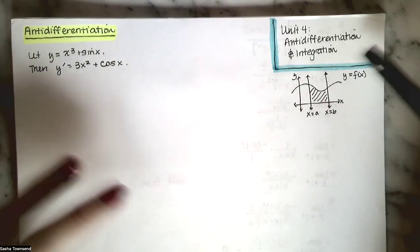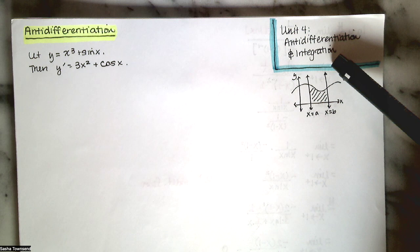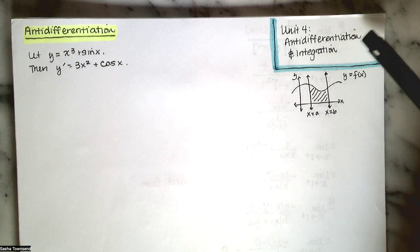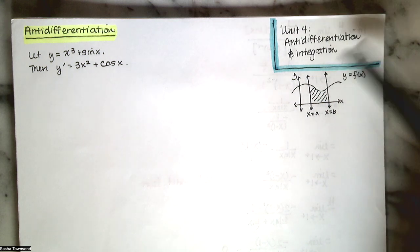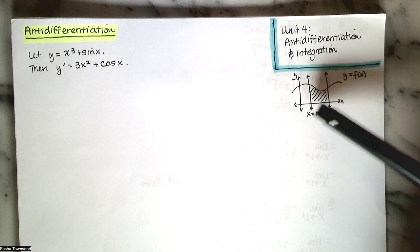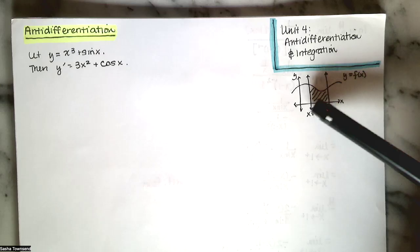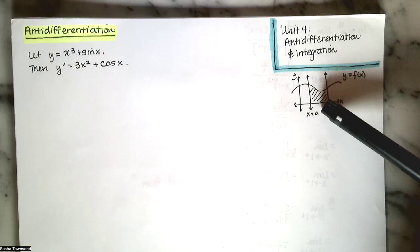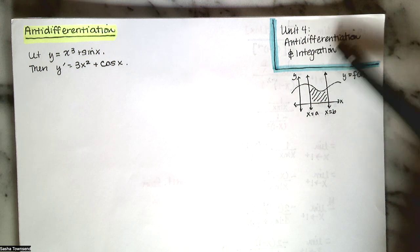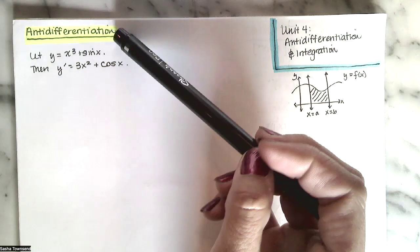In this video, we begin unit four, which is all about anti-differentiation and integration. Anti-differentiation and integration are two different but related processes. We'll talk about anti-differentiation in this video. Integration is related to the problem of finding the area between a function y equals f of x and the x-axis on some interval from a to b. We can find that by evaluating a definite integral, which requires anti-differentiation as well.